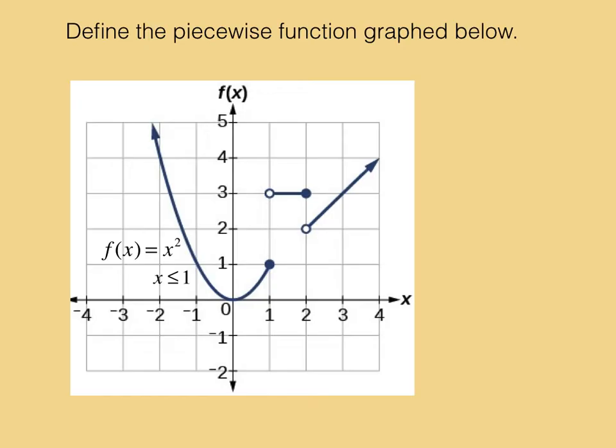The middle piece is a constant function, f of x equals 3. This is defined from 1 to 2, not including the endpoint at 1, but including the endpoint at 2.